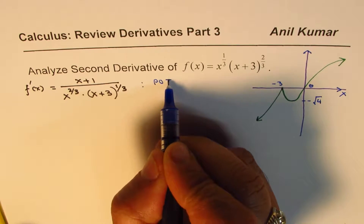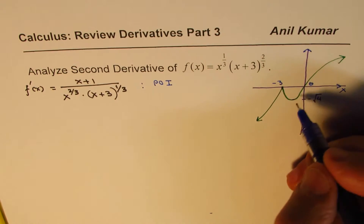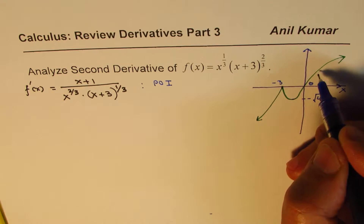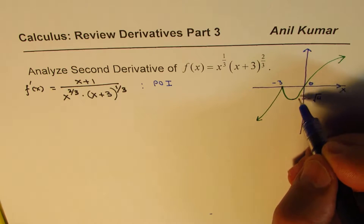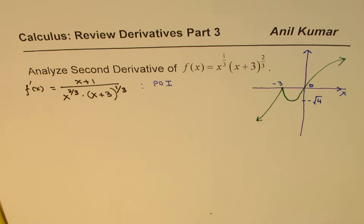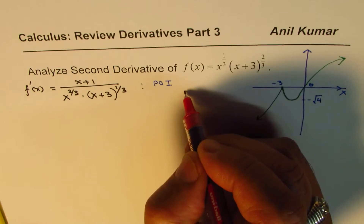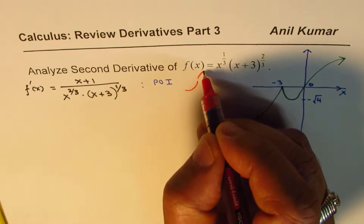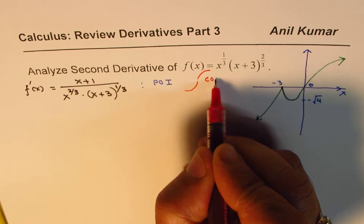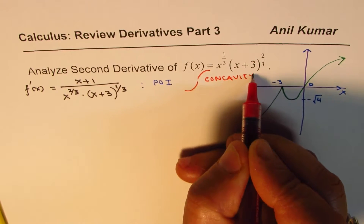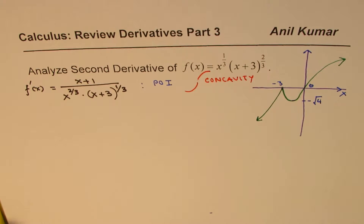Now we need to analyze the second derivative to find two things: points of inflection and concavity. The graph's behavior — how it turns, where concavity changes from concave up to concave down — will be determined here. This is the main objective of Part 3. In Part 4 we'll club all the things together and finally sketch our graph.